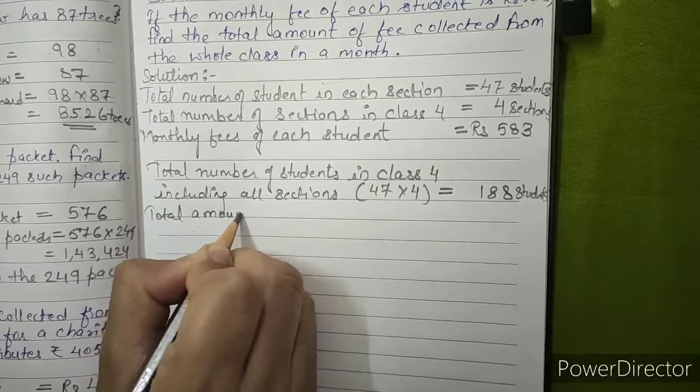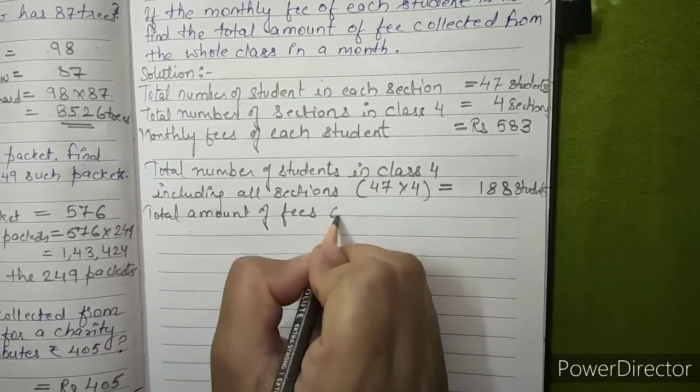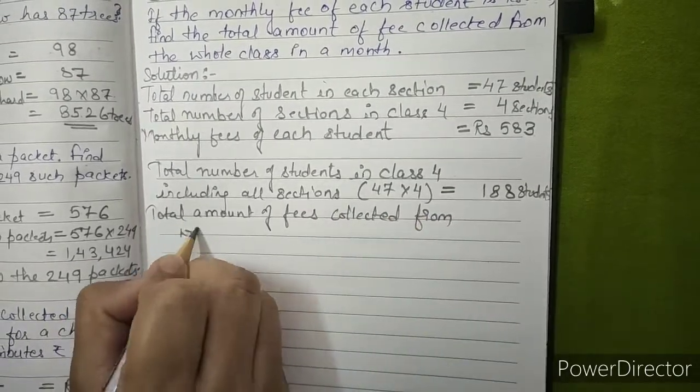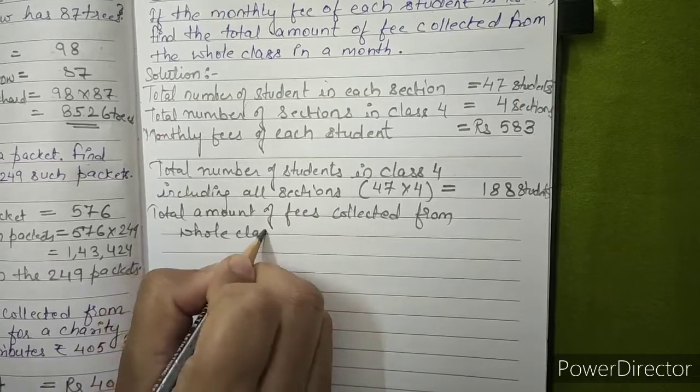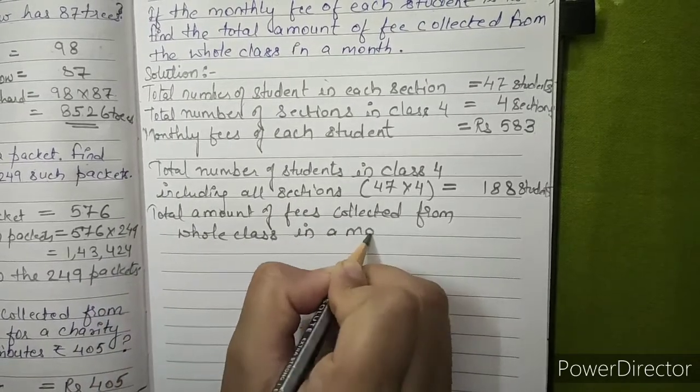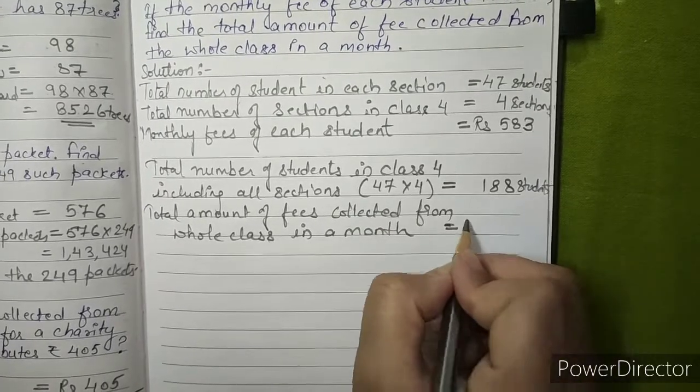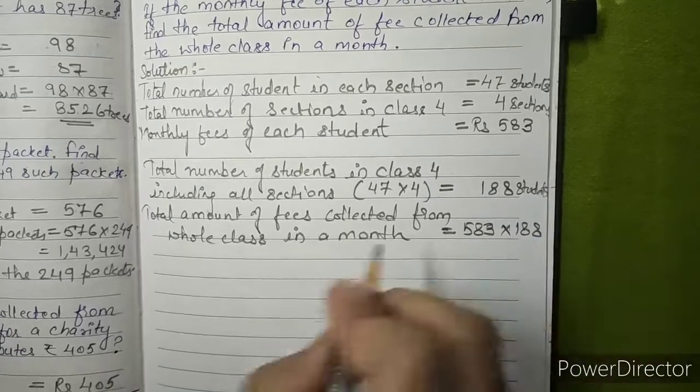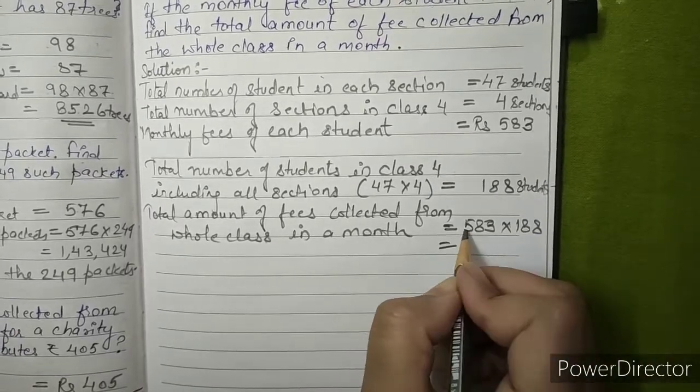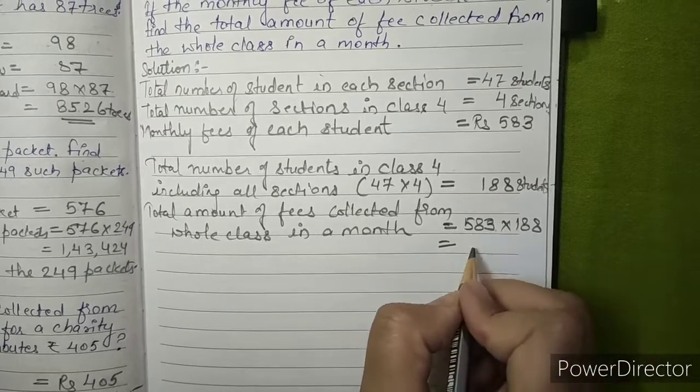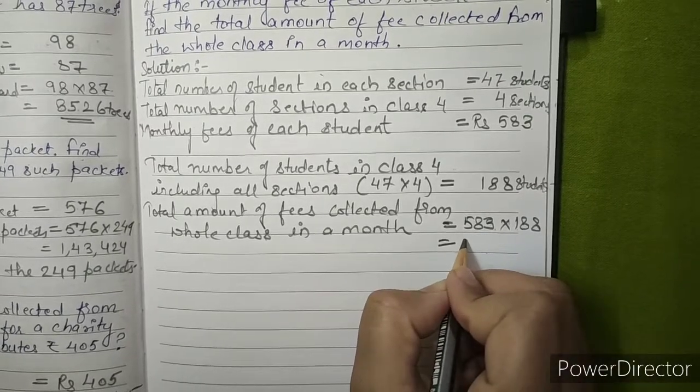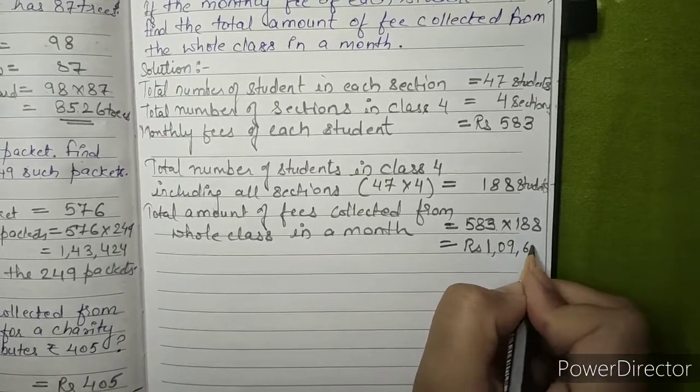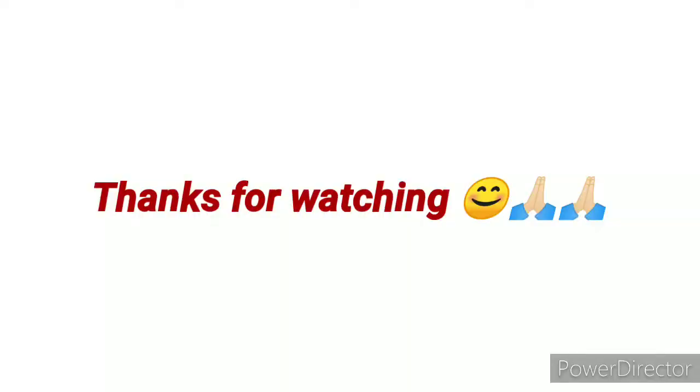Total amount of fees collected from whole class in a month equals 583 times 188. After multiplying 583 and 188 we got our answer as Rs. 1,09,604. This is our answer.